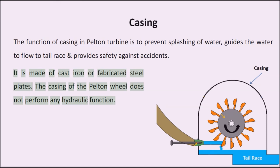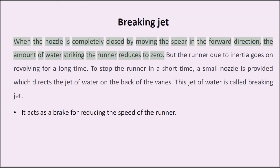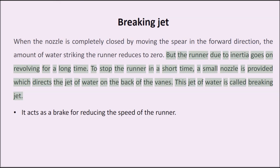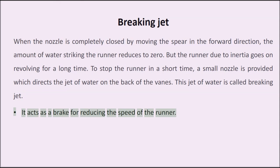Braking jet: when the nozzle is completely closed by moving the spear in the forward direction, the amount of water striking the runner reduces to zero. But the runner, due to inertia, goes on revolving for a long time. To stop the runner in a short time, a small nozzle is provided which directs a jet of water on the back of the vanes. This jet of water is called the braking jet, and it acts as a brake for reducing the speed of the runner.